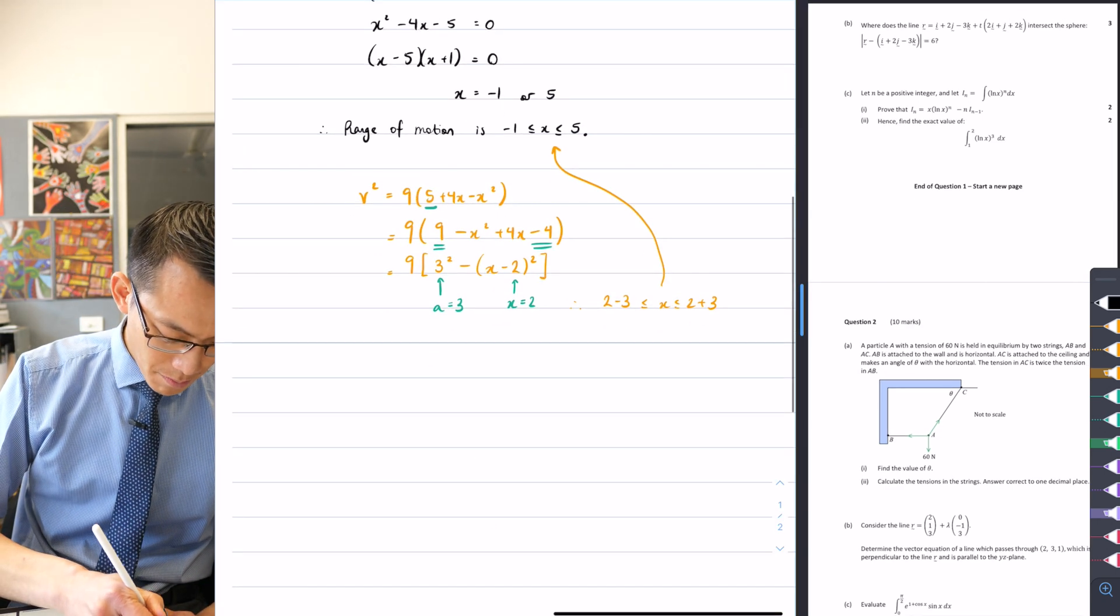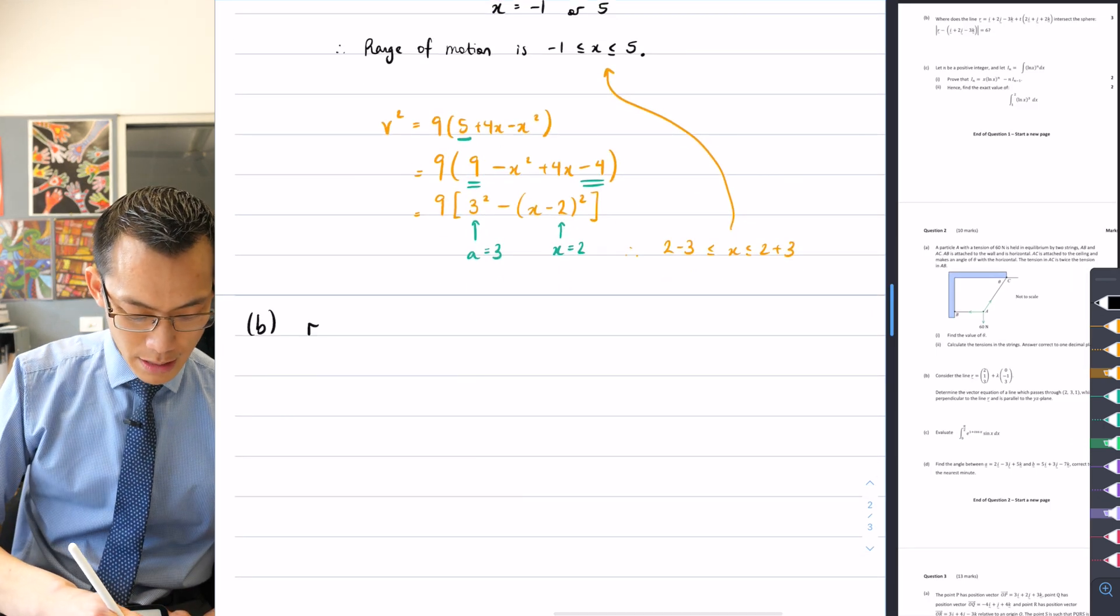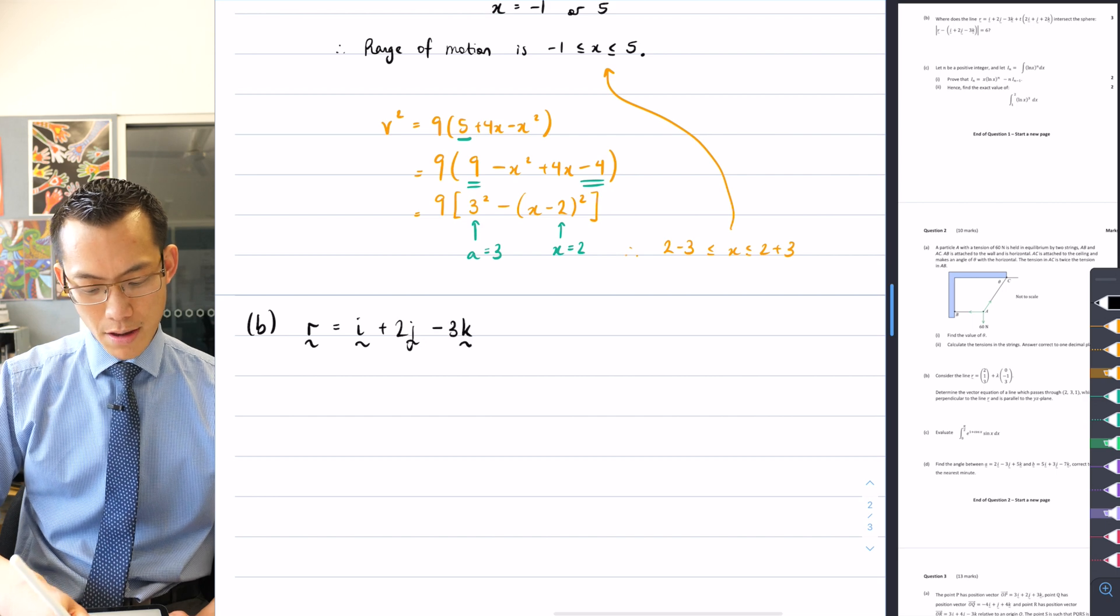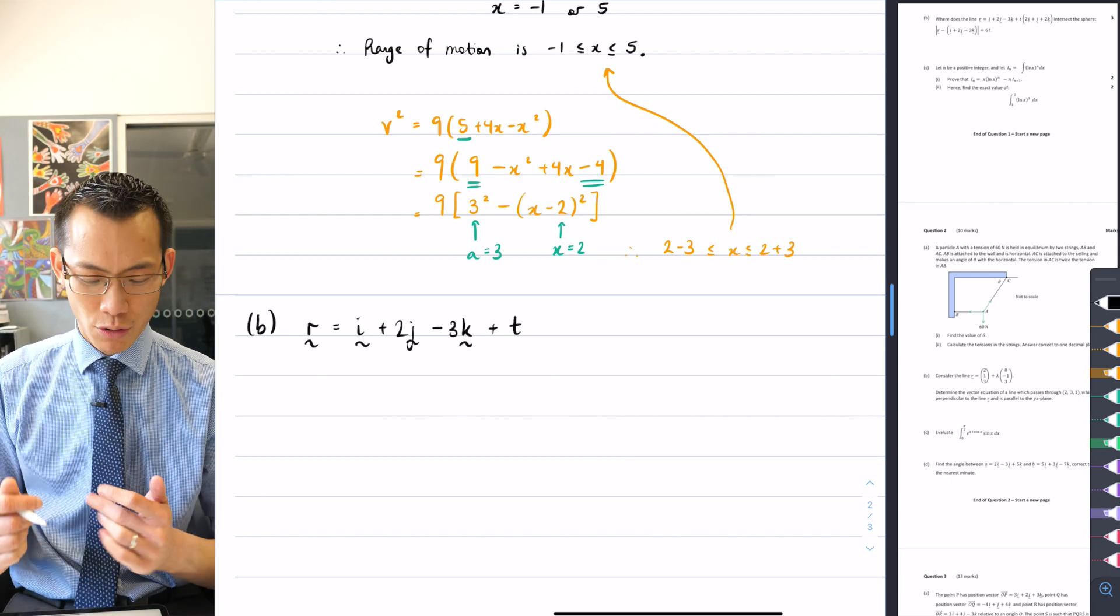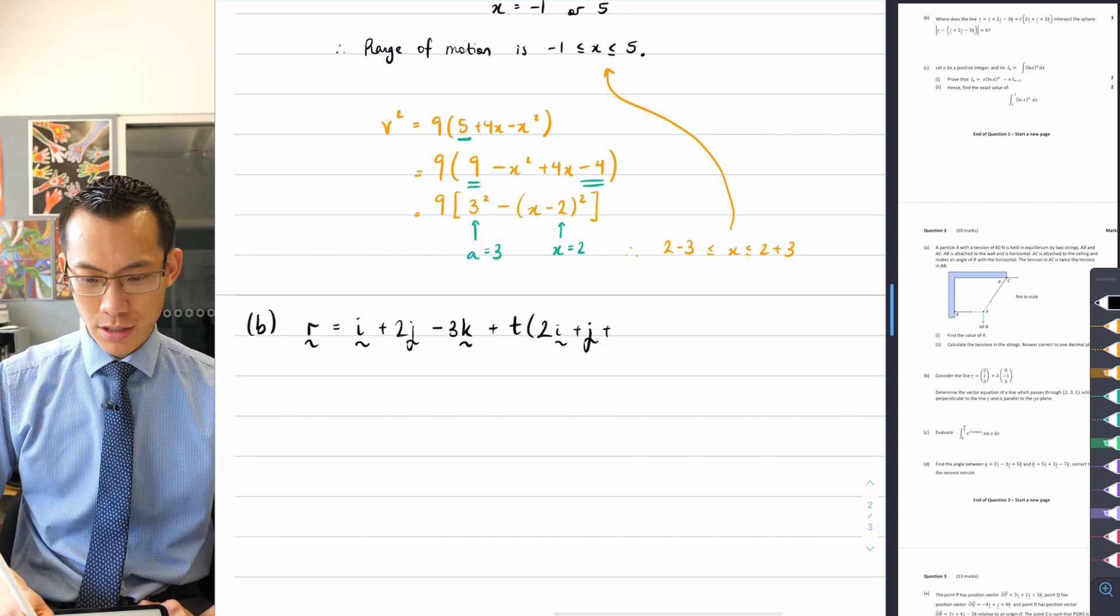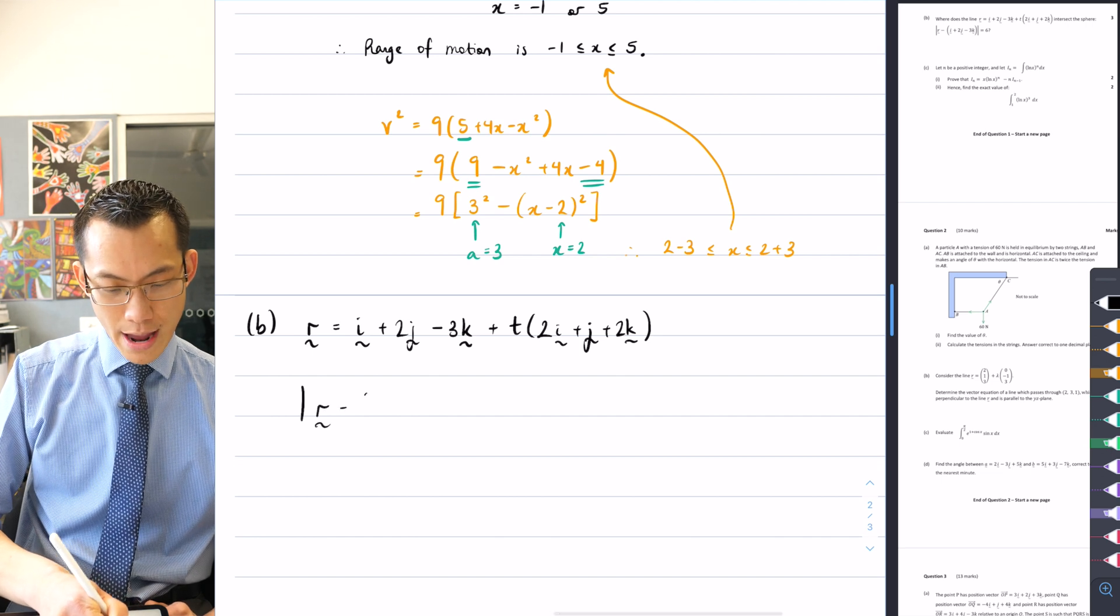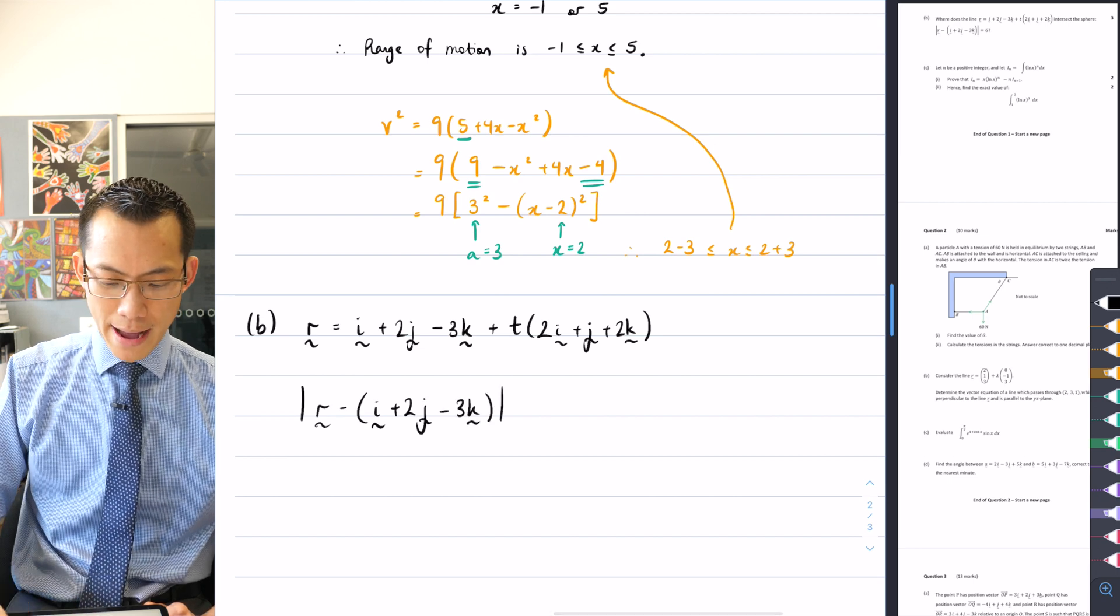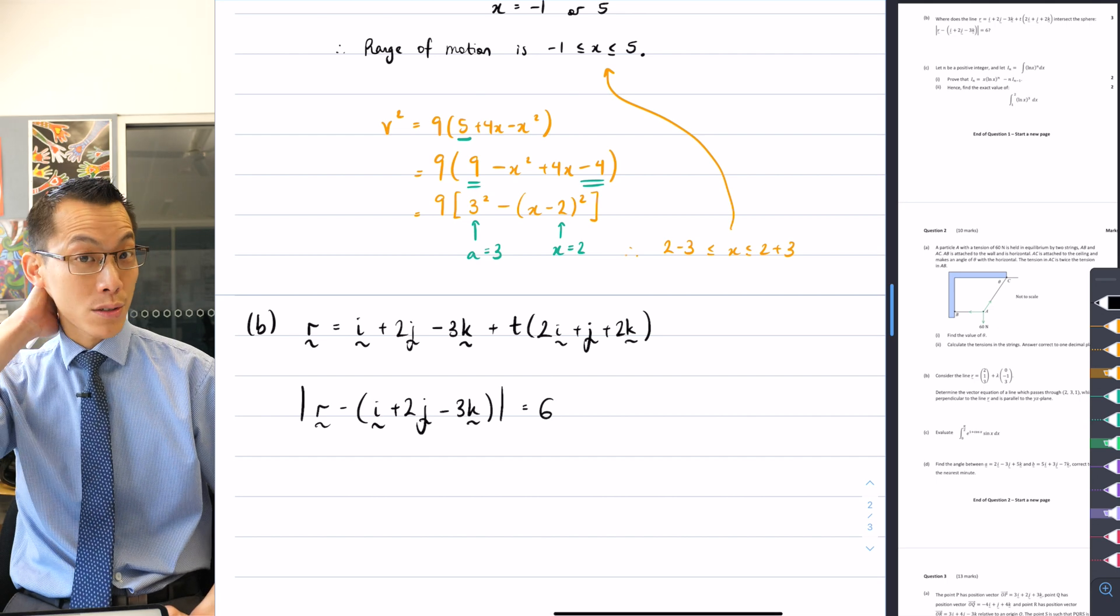To solve simultaneously, I'm going to get the two equations together. So I had the line being equal to i plus 2j minus 3k, plus t times 2i plus j plus 2k. There's our straight line. Our sphere is going to be r take away 2j minus 3k, and what's that going to be equal to? 6. So there's our radius of our sphere.